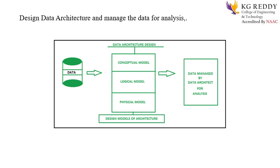Coming to the models of data architecture, it breaks the subject down by going through the traditional architecture process. These three are the traditional architectural processes: the first one is the conceptual model, the second one is the logical model, and the third one is the physical model. These three are the major and most important things for data architecture.